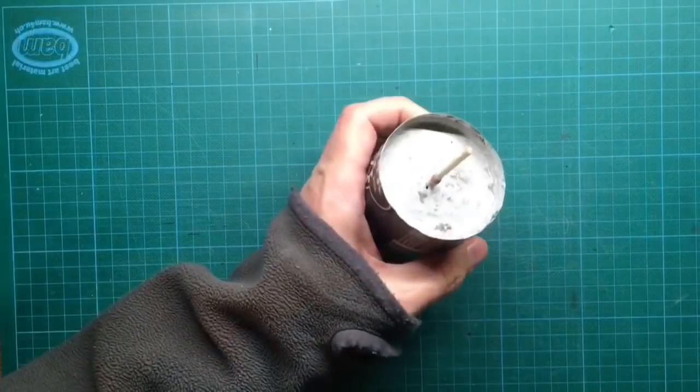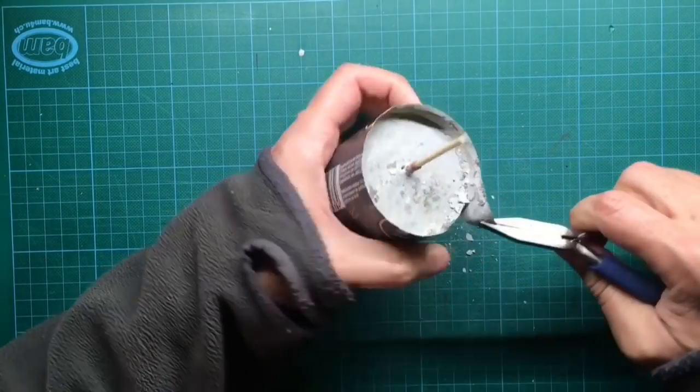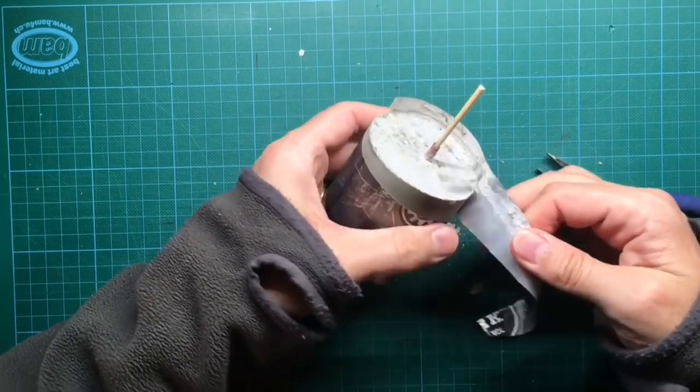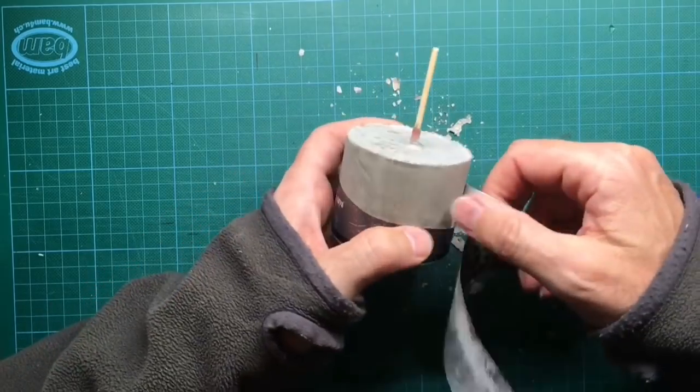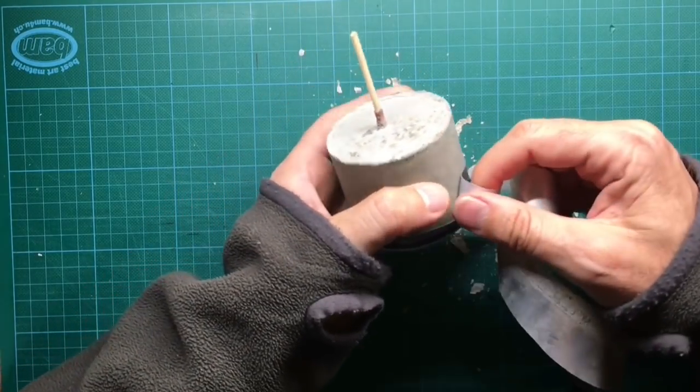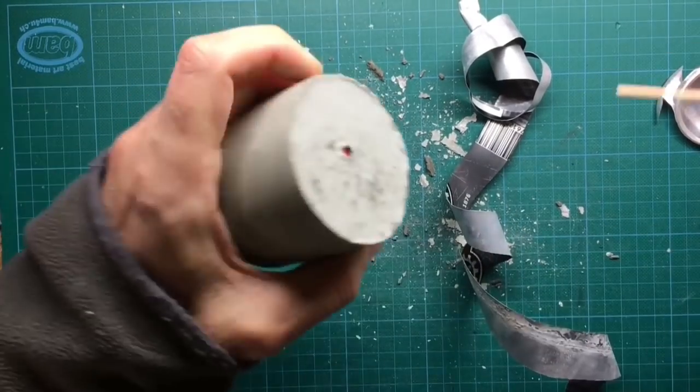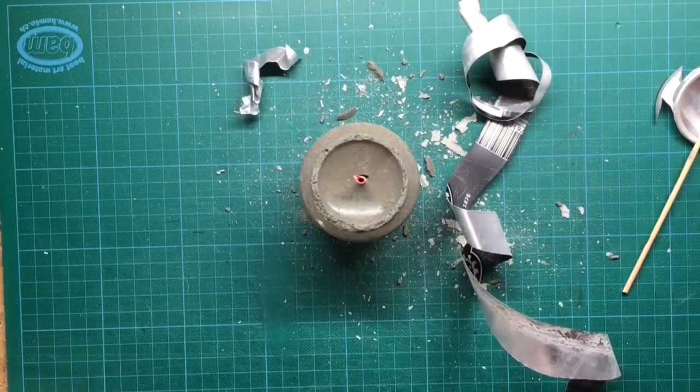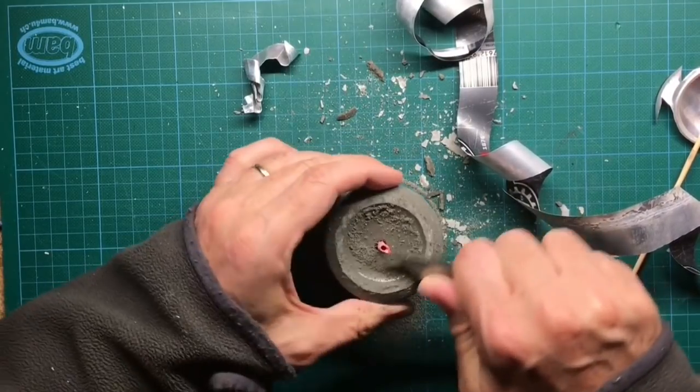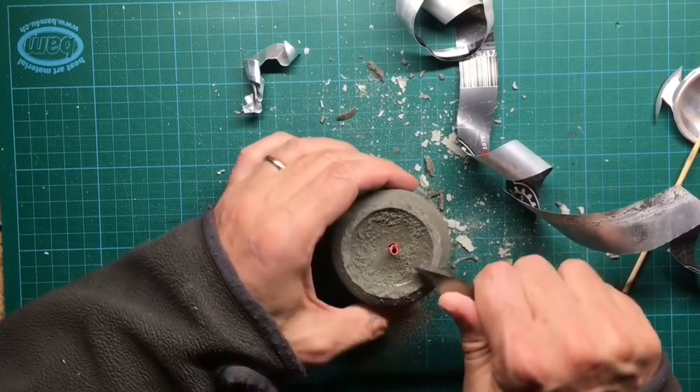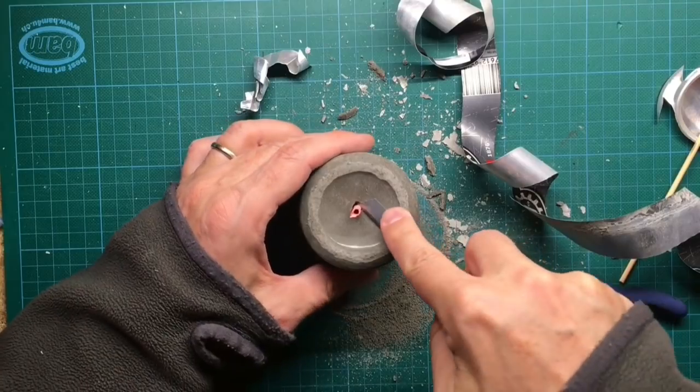Let it dry overnight. And then the next day remove the aluminum. Within one day the concrete is not completely hardened, so you can easily reshape the size with a hard piece of metal.